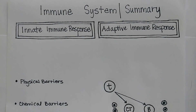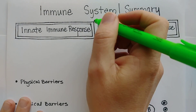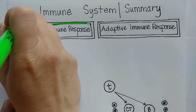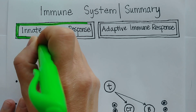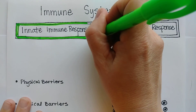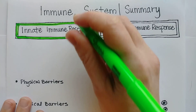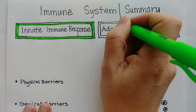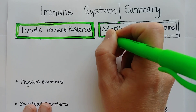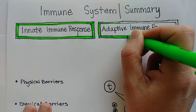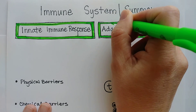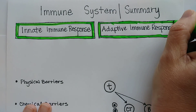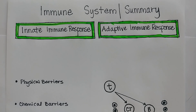Welcome to this video on the immune system. This is a review intended for a student preparing for an exam on the immune system, a standardized exam like the TEAS test, or just a basic overview when you're first starting to learn about the immune system. The immune system is divided into two parts: the innate immune response and the adaptive immune response, and we will discuss each of these separately and then talk about how they are related.